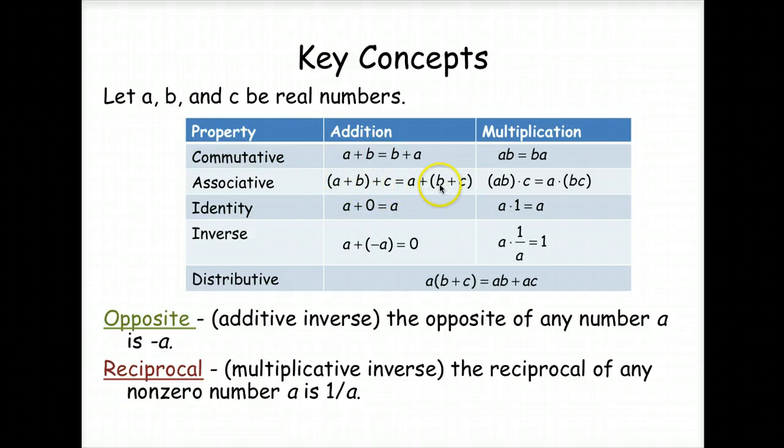Associative is different. You're changing your grouping symbols. So notice A, B, C, A, B, C, but here A and B in parentheses, and here B and C is in parentheses. So we're changing grouping symbols on associative.